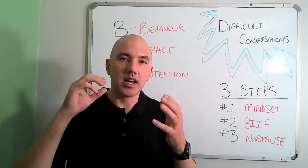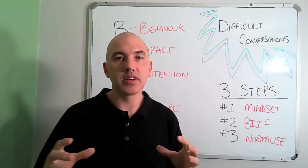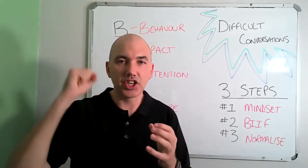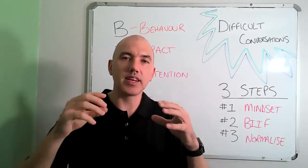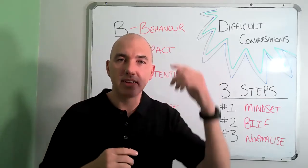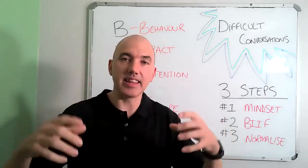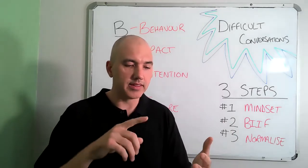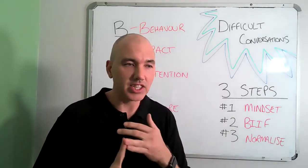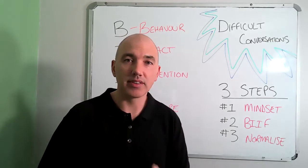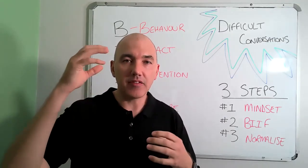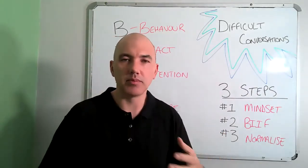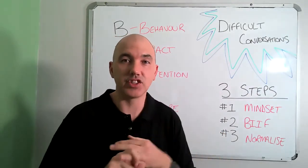And before we know it, we've got all this cortisol going around our body and we're shaking, we can't speak properly. This is because — using neuroscience — our amygdala, which is around emotions in the brain, has taken over. That chimp is out of the box, and it is inhibiting the prefrontal cortex, which is your executive center within the brain. This helps us with problem solving, challenging situations, thinking clearly, planning, and prioritization.